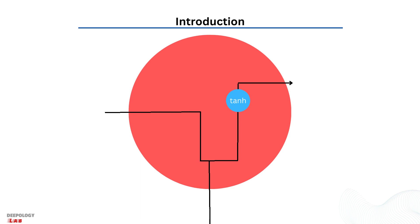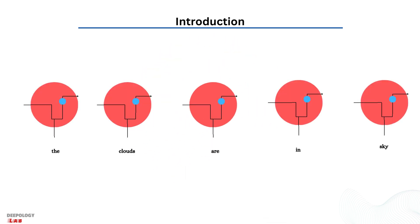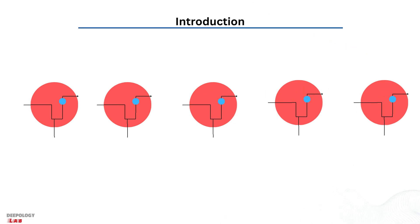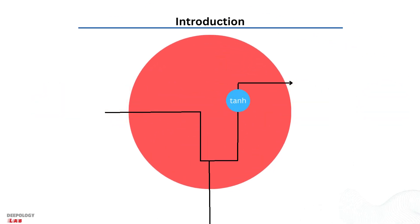For example, consider a recurrent model trying to predict the next word based on the previous ones. If we are trying to predict the last word in 'the clouds are in the sky,' we don't need any further context — it's pretty obvious the next word is going to be 'sky.' In such cases where the gap between the relevant information and the place it's needed is small, RNNs can learn to use the past information.